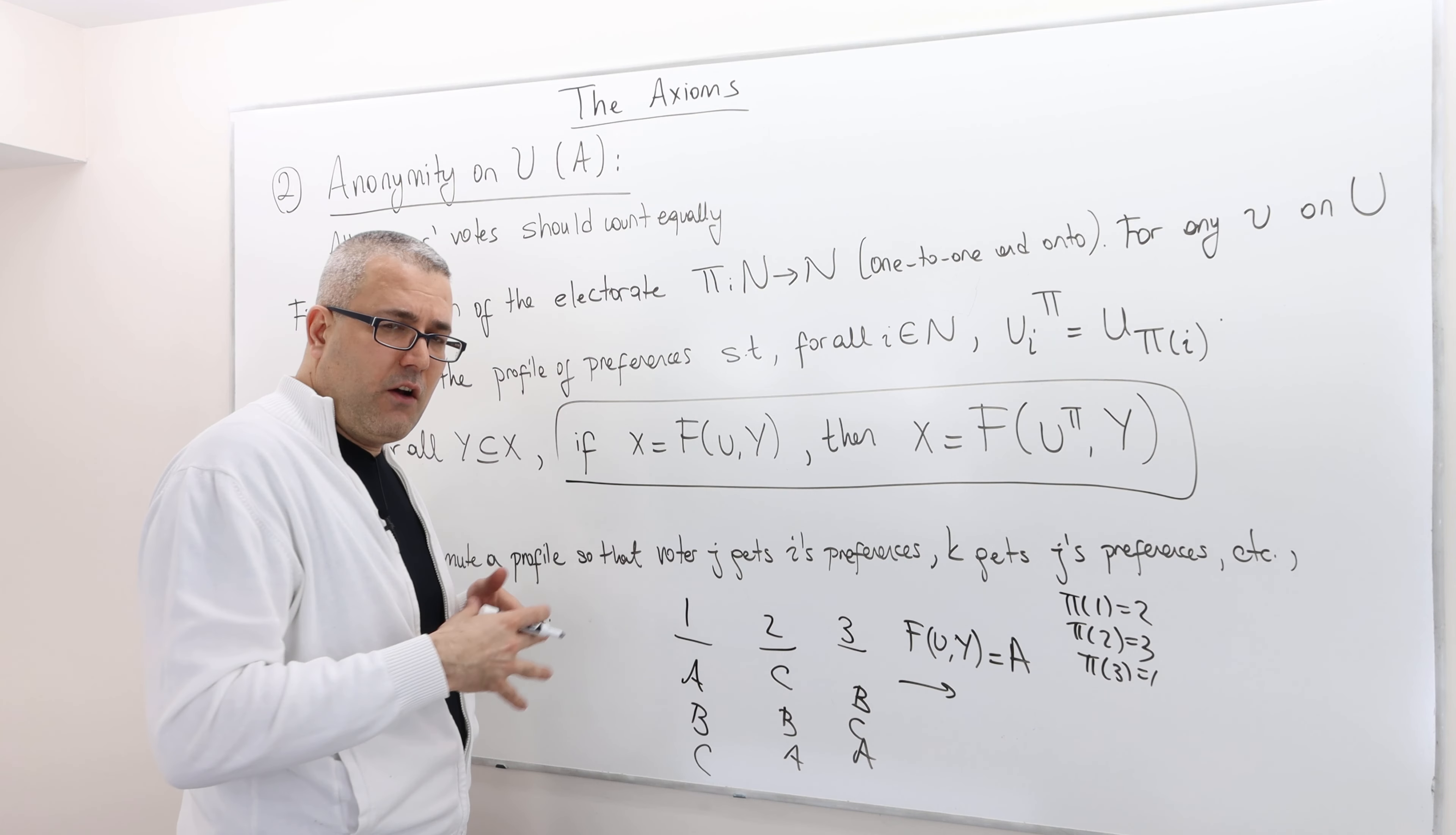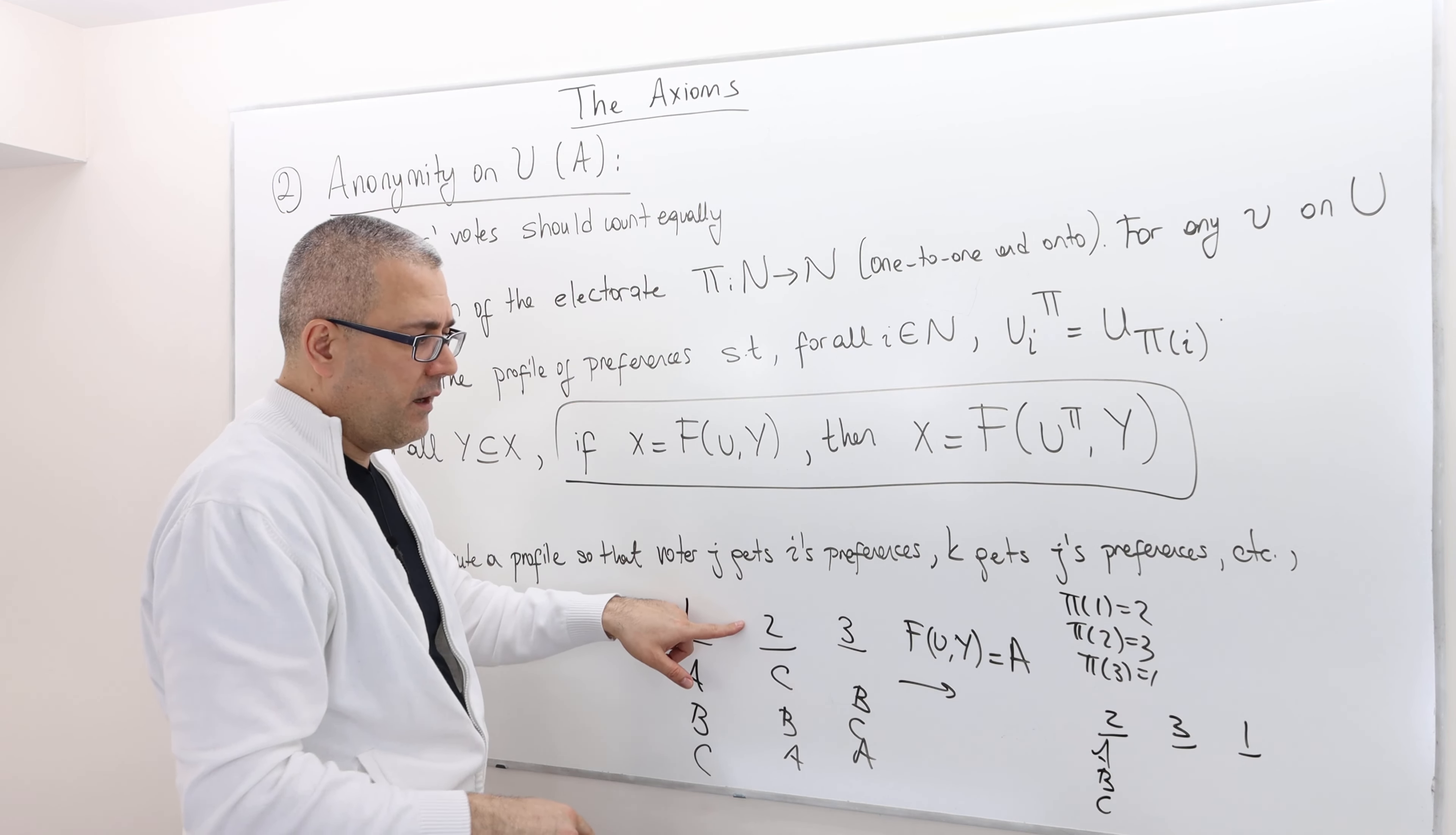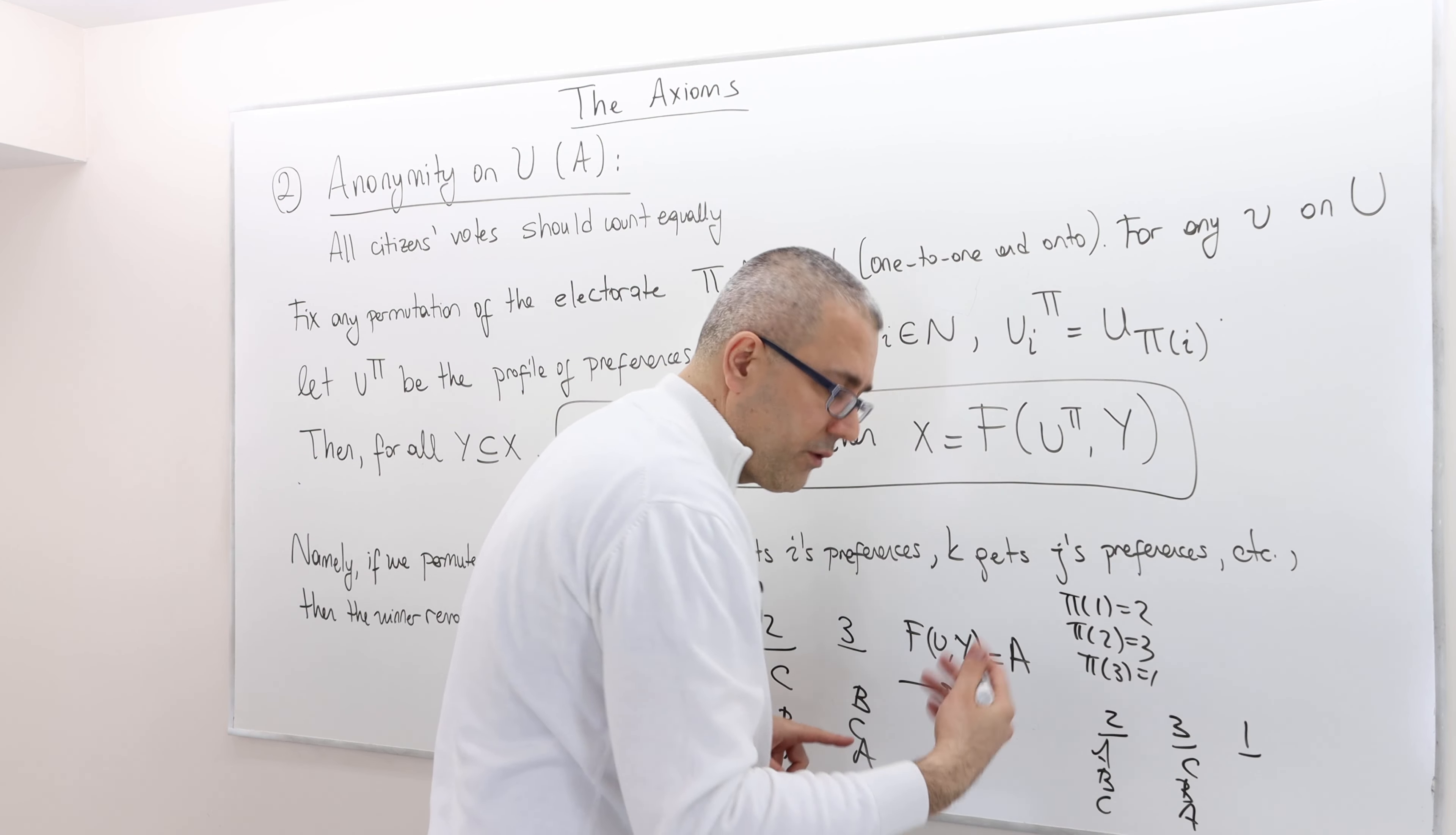Well, then it says, think of another preference profile where agent two, three, and one gets the following. Remember the new agent two is previous agent one. So it's a, b, c, and new agent three is the old agent two. So it's c, b, a. And then the new voter one is the old player three or voter three. I'm sorry.